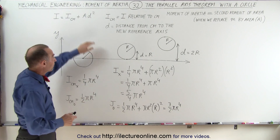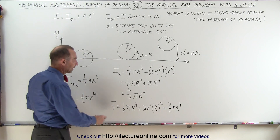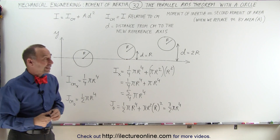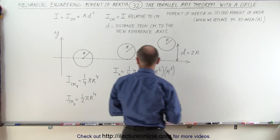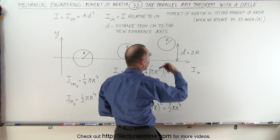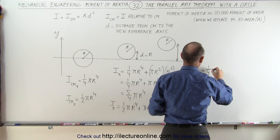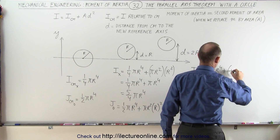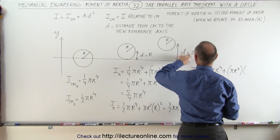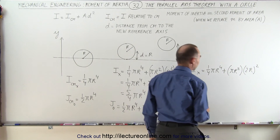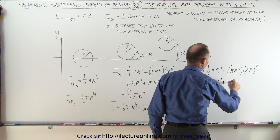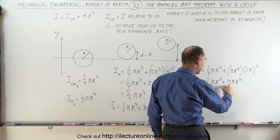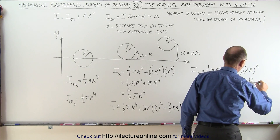We can use the parallel axis theorem to move it relative to the x-axis, or to find the moment of inertia relative to the circle rotating about that point. Finally, we're going to do it when the circle has moved a distance of 2r. The moment of inertia relative to the x-axis is equal to one-quarter pi r to the fourth plus the area of the circle pi r squared times the distance 2r quantity squared. That gives us one-quarter pi r to the fourth plus 4 pi r to the fourth, which is 16 fourths plus one-fourth, equaling 17 fourths pi r to the fourth.